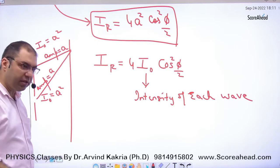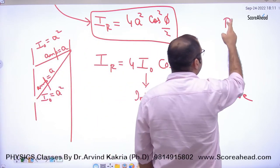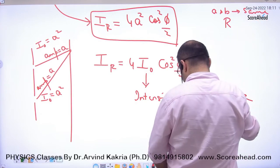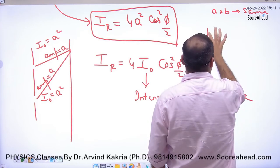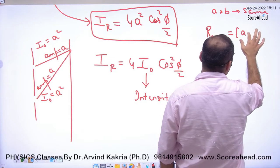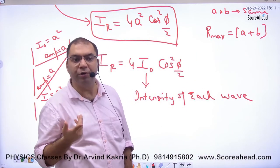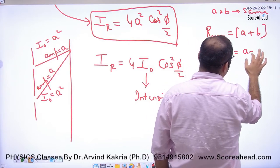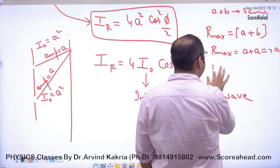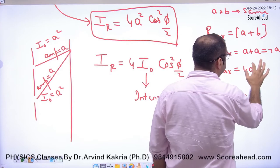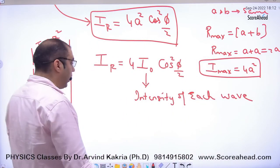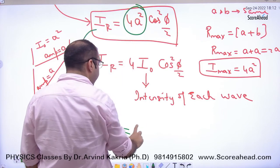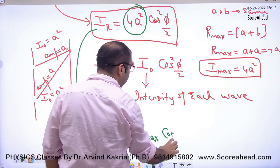पहला point clear है। अब यह भी हो सकता है कि books यह कहें: अगर amplitude a और b same हैं, तो r_max = a + b = 2a। और I_max = r_max² = 4a²। तो books उस formula को modify करके लिखती हैं: resultant intensity = I_max·cos²(φ/2), where I_max = 4a²।